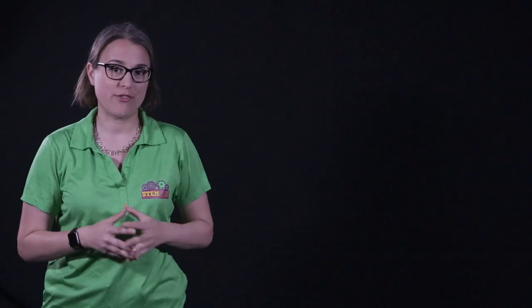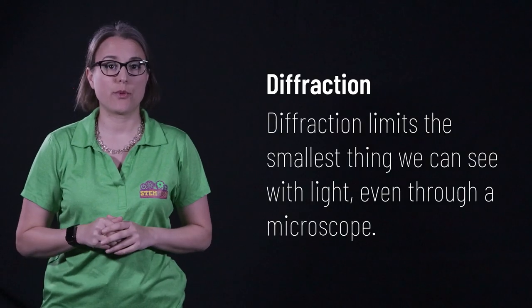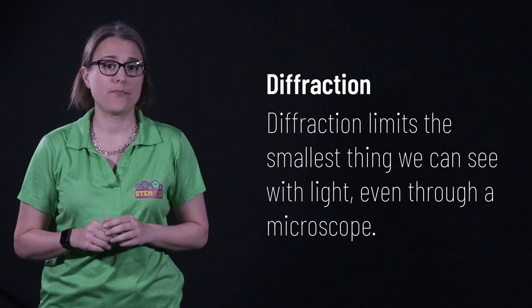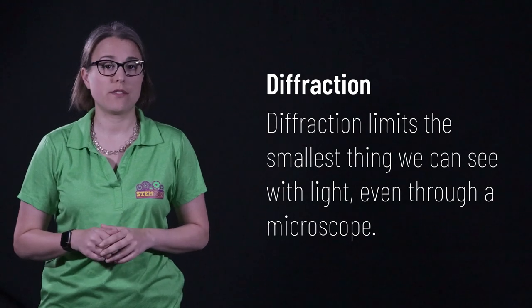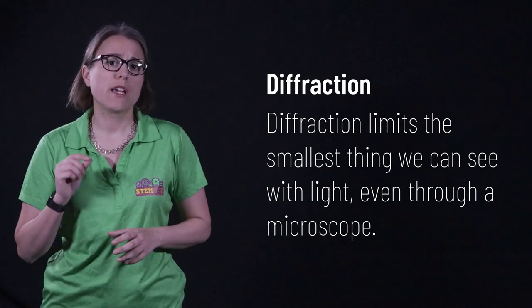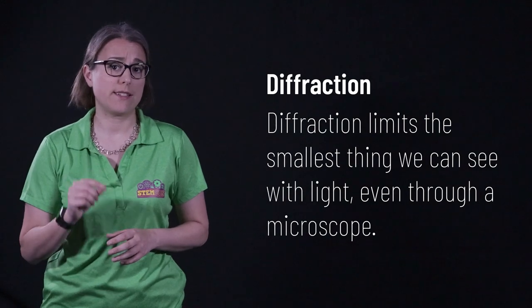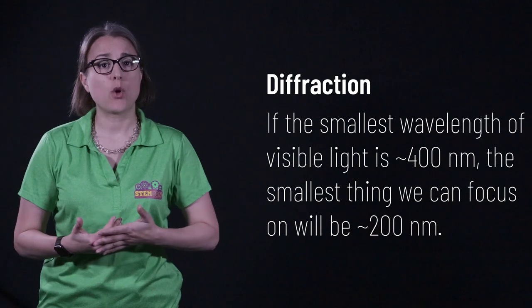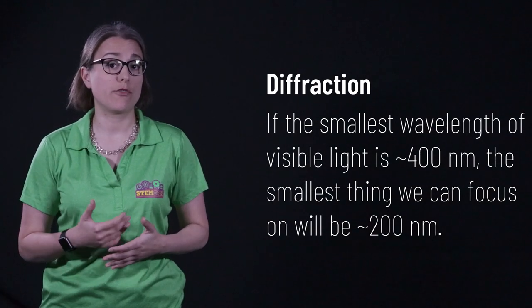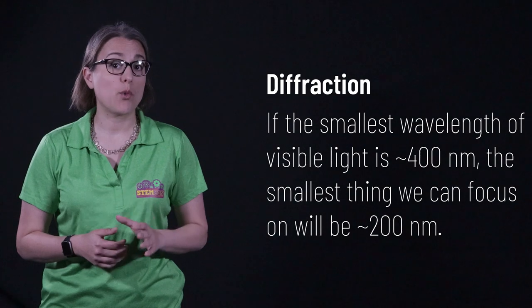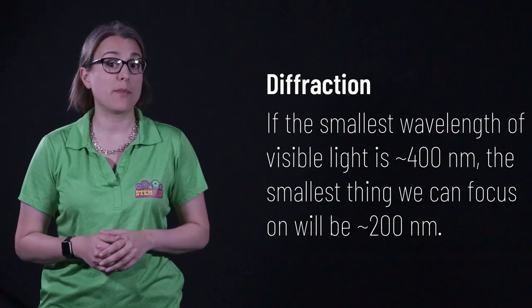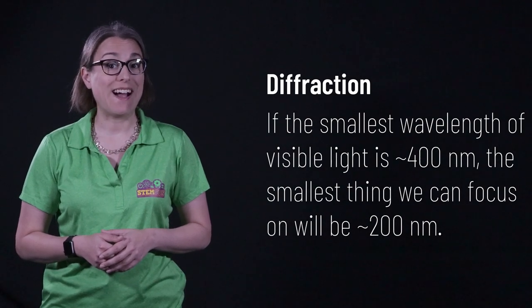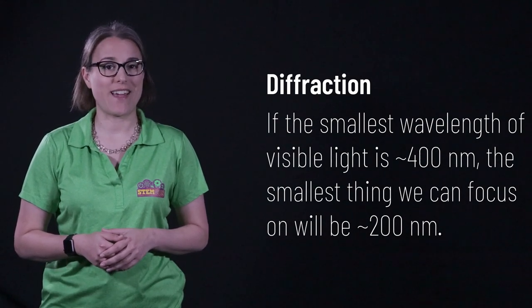One last thing about diffraction. Because light bends when it interacts with an opening, diffraction limits our ability to see really small things. This means that most imaging devices, such as cameras and microscopes, can only focus sizes that are larger than about one-half the wavelength of light that's used. If the smallest wavelengths of visible light are 400 nanometers, that means that the smallest things we can focus on using a microscope or camera will be larger than 200 nanometers. We cannot use visible light to see things smaller than that.